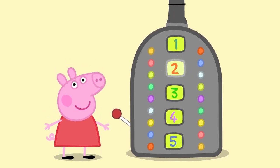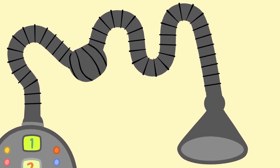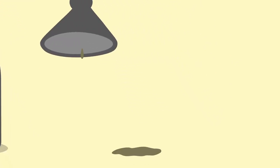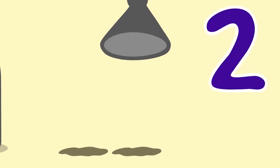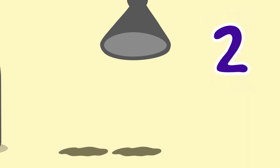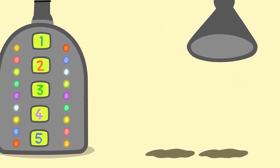Excellent! The Beep Bop Boop Machine has landed on the number two! Now how many muddy puddles do we have? Can you count them? One, two! Great job! Now we have two muddy puddles!